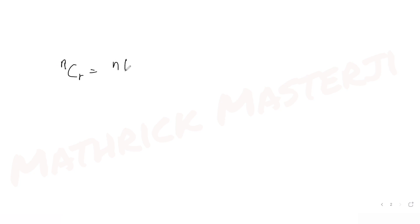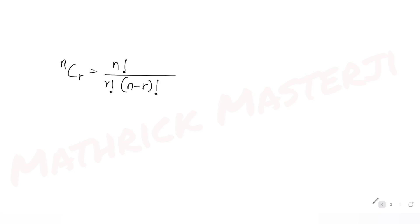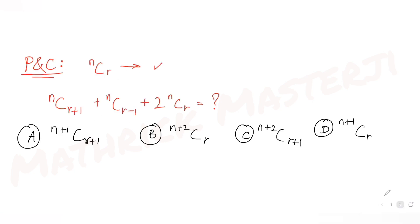Before starting, let me write down the formula: nCr = n! / (r! × (n−r)!). That is the formula for combinations that we are going to use. Now let's start with the left-hand side of the expression, which is nCr+1 + nCr-1 + 2·nCr.